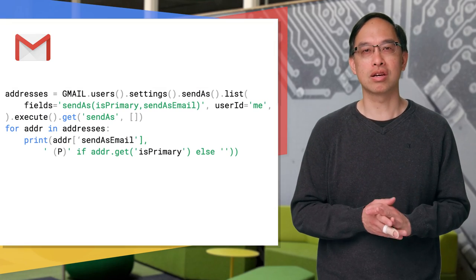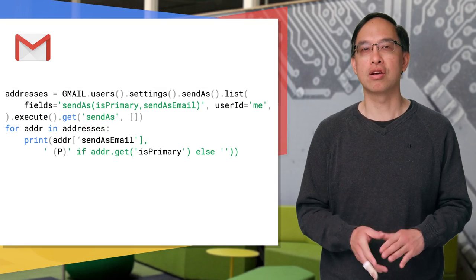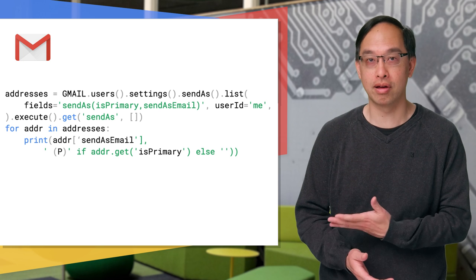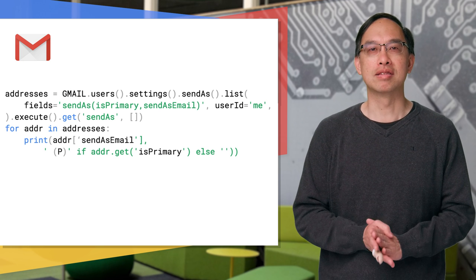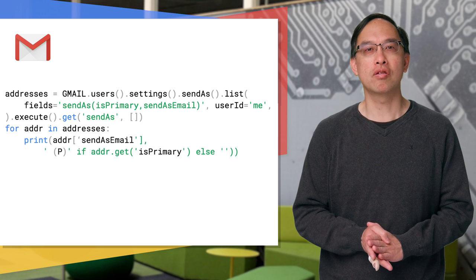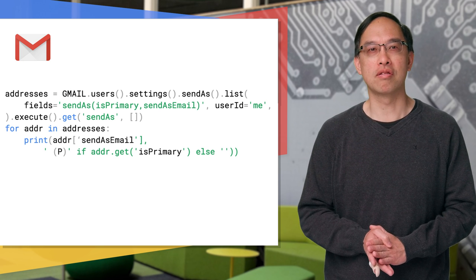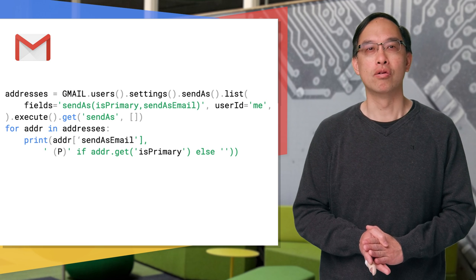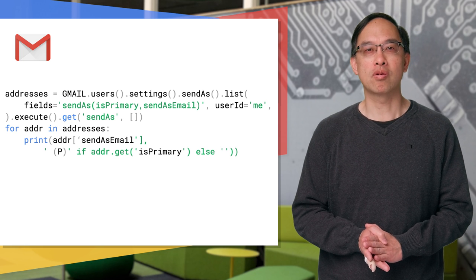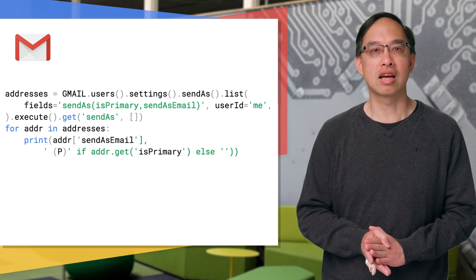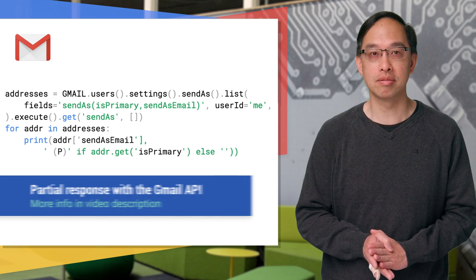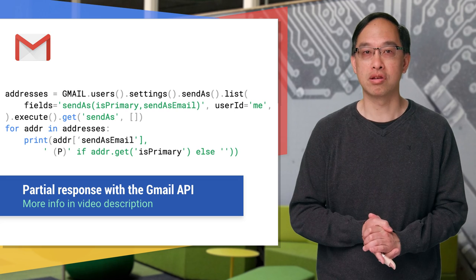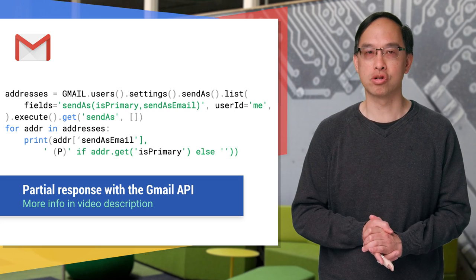To see what it looks like in real life, here's some Python code. The snippet displays all of your email addresses and flags your primary address with a P. We drop in the fields parameter just like how we drew it up on the previous slide. Also see the Gmail API docs page on partial response.